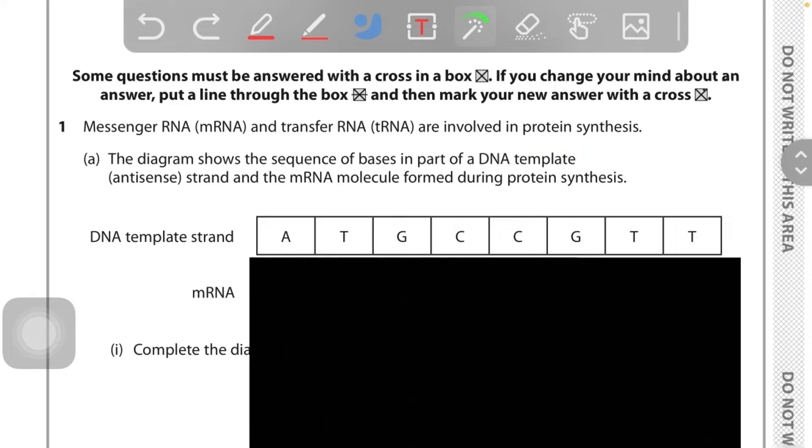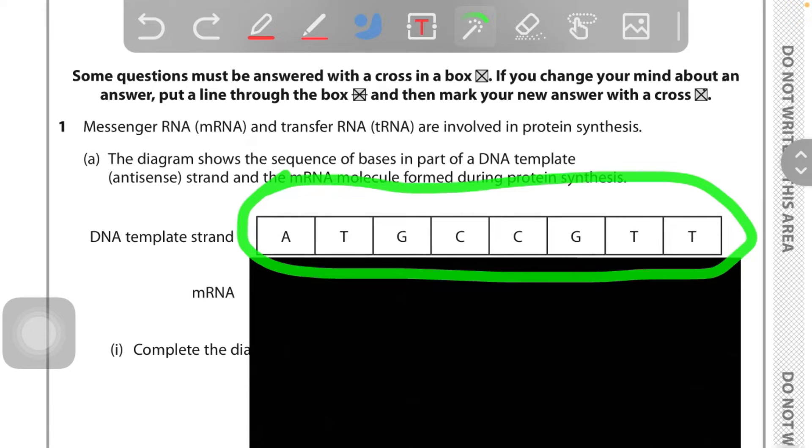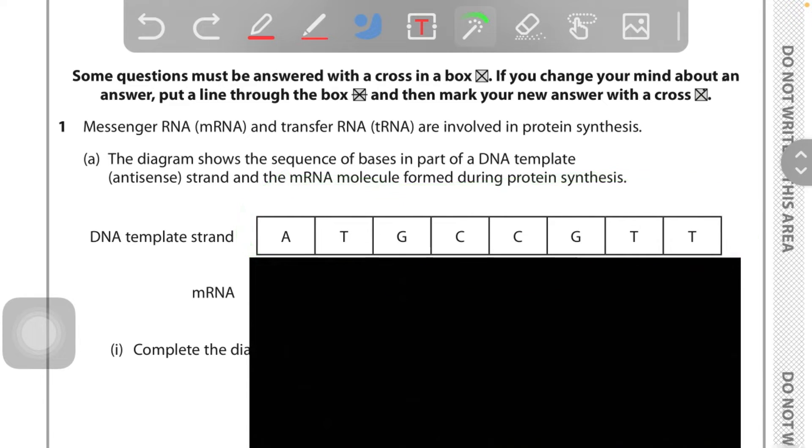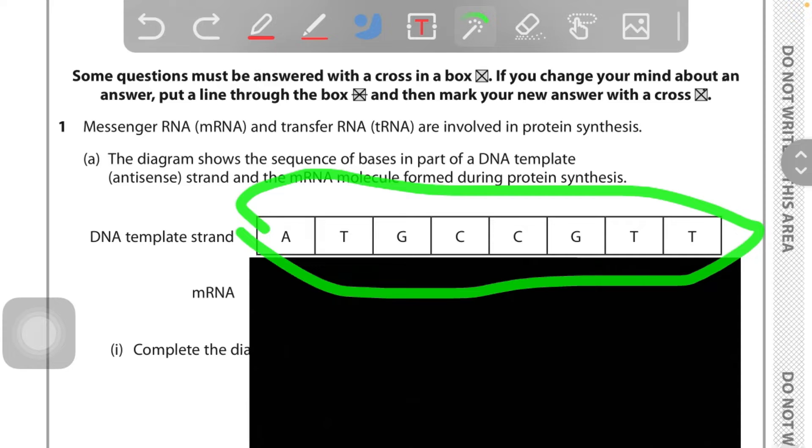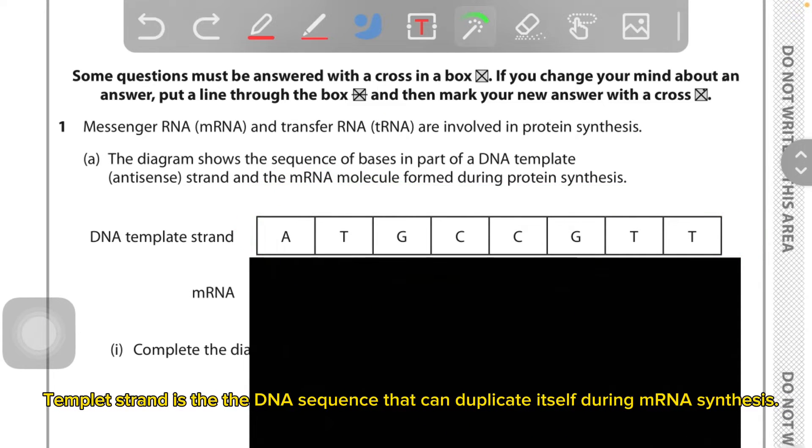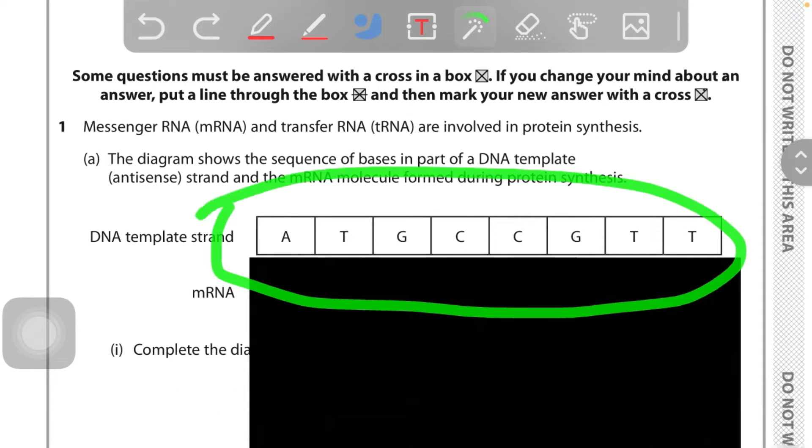It's our first question: messenger RNA (mRNA) and transfer RNA are involved in protein synthesis. The diagram shows the sequence of bases in part of a DNA template antisense strand and the mRNA molecule formed during protein synthesis. This is the DNA template strand - you know what the DNA template strand is? DNA is made up of two strands, so the template strand is just one strand among those two strands. We need to complete this diagram and find out the mRNA of it.